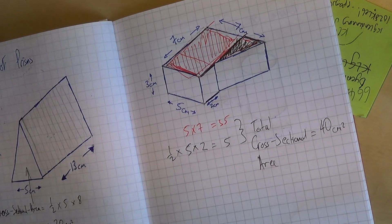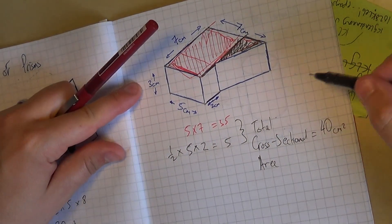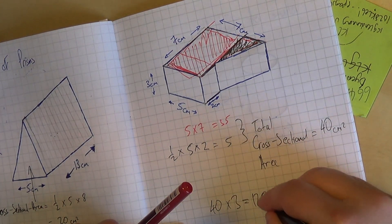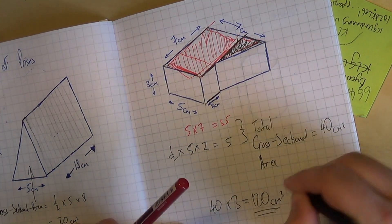Okay. And in this case, this is three centimetres tall. So that means there's three slices. So 40 times three is 120 centimetre cubes. That is the volume.